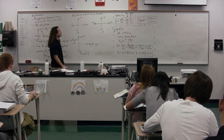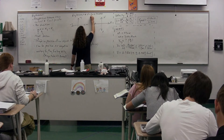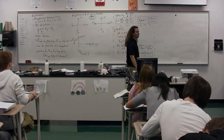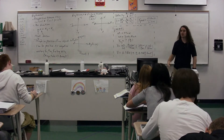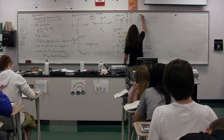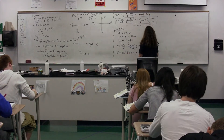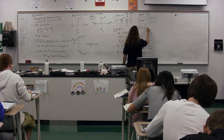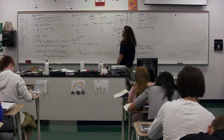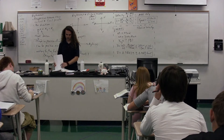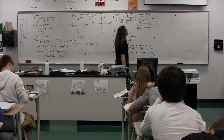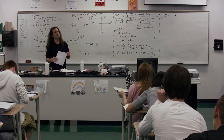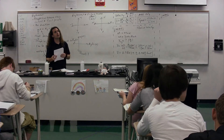Notice that speed uses distance, whereas velocity uses displacement. Displacement has both magnitude and direction, whereas distance has only magnitude. Velocity has magnitude and direction, so speed, just like distance, has magnitude only. Be very careful to realize that speed does not equal velocity, just like displacement does not equal distance. They are two very different things.